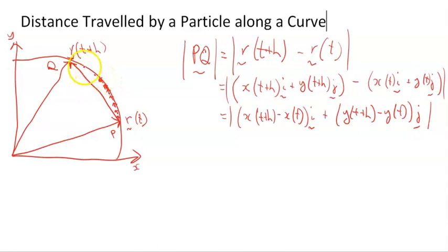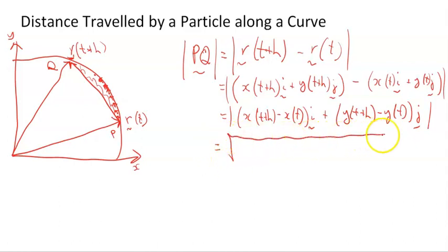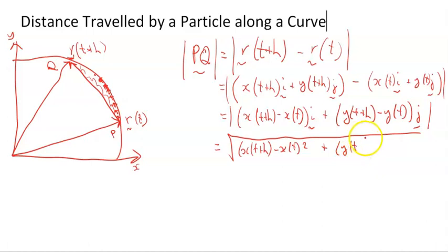Instead of going one single displacement vector from P to Q, if we take an infinite number of them at little positions — infinitesimally small — and sum them, that gives us the distance along that curve. All this error left over, all this extra gap, disappears as we have more and more vectors: R of t plus h1, R of t plus h2, all these little tiny ones along here. As we sum them all and as they go to infinity, we get the exact actual distance. The magnitude of this would be the square root of: X of t plus H minus X of t, squared, plus Y of t plus H minus Y of t, all squared.